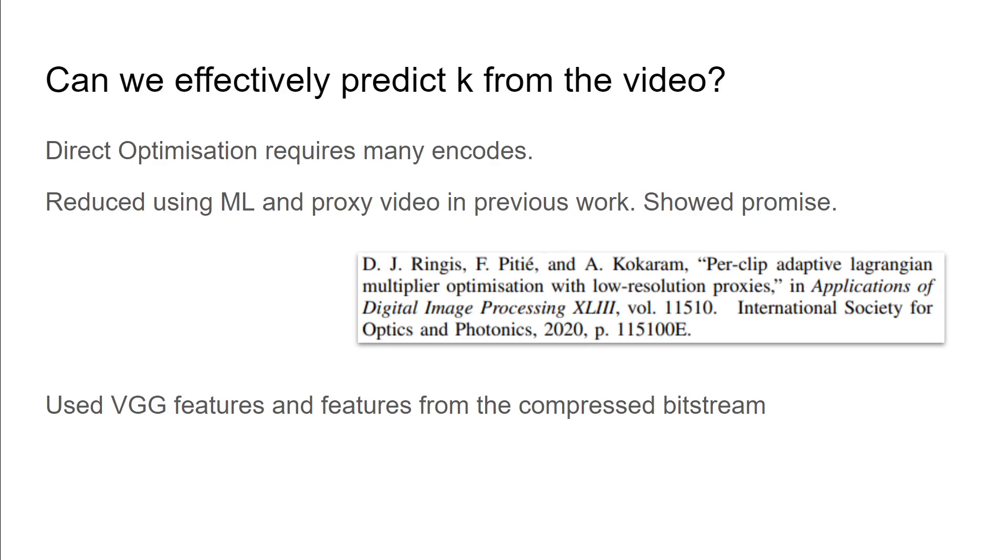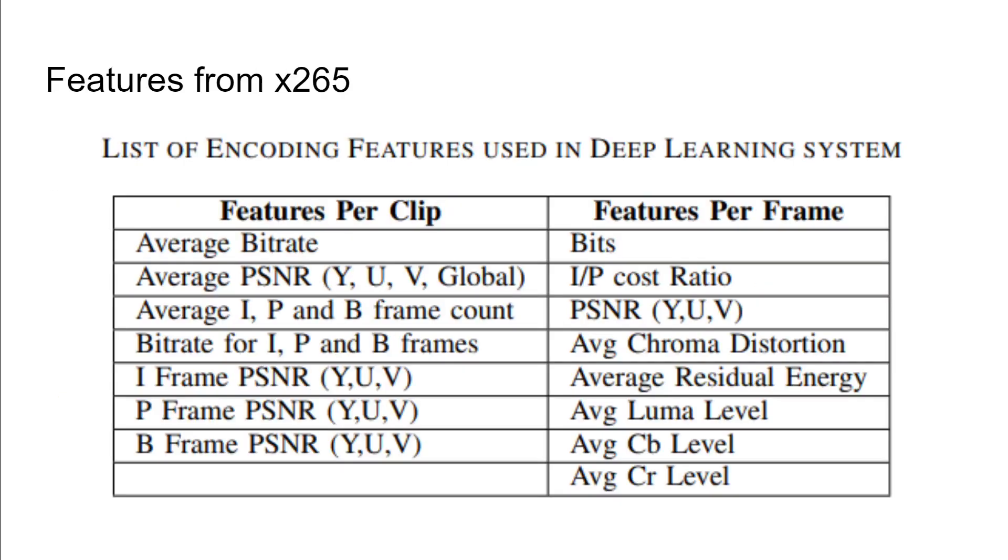What we've done is we've used VGG features from a single frame of each clip, as well as an expanded set of features from the compressed bitstream to see if we could more accurately determine k and by extension what the Lagrangian multiplier should be when compressing a particular clip. These features are all generated from the first pass of the encoder, and we feed this information into our model.